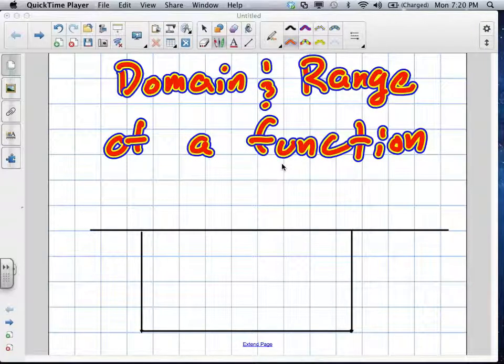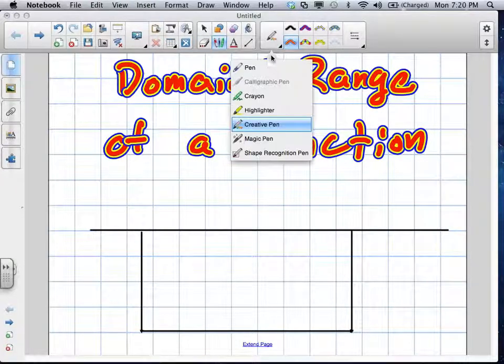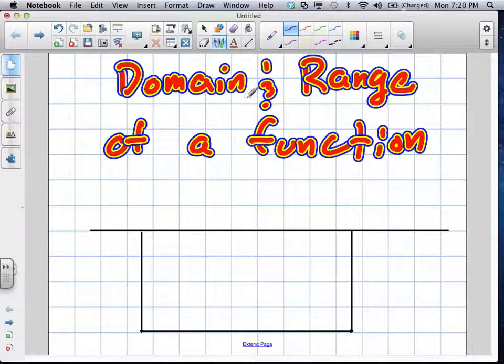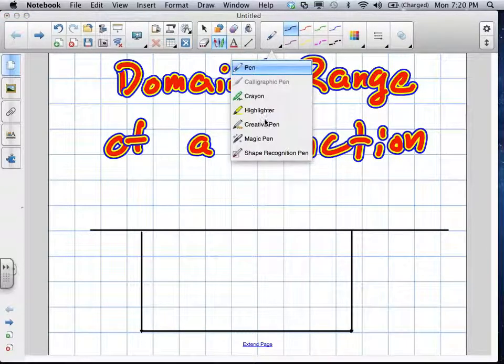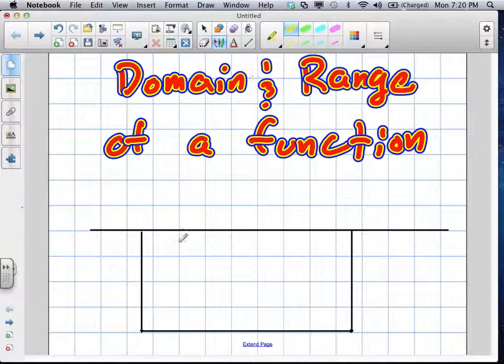Okay, we're going over domain and range of a function. They've given us a question where they said that they're making a fence against the back of their barn. So we weren't too clear on that part, but what we realized is what that means is this is actually only going to be a fence with three sides, because we don't need a side for the barn. It's going to be attached to the barn.